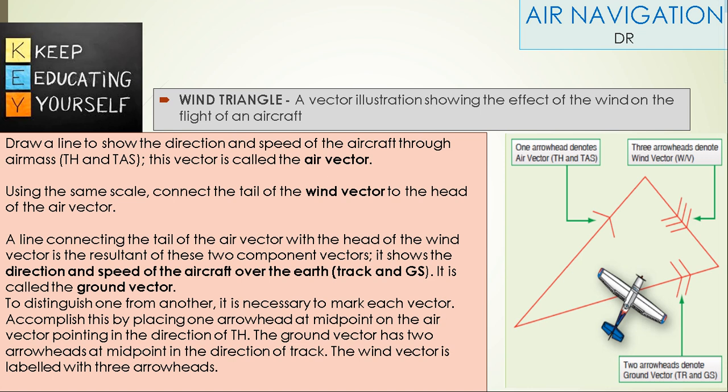Wind Triangle: A vector illustration showing the effect of the wind on the flight of an aircraft. Draw a line to show the direction and speed of the aircraft through the air mass—true heading and true air speed. This vector is called the air vector, represented by a single arrow.